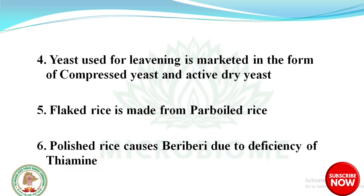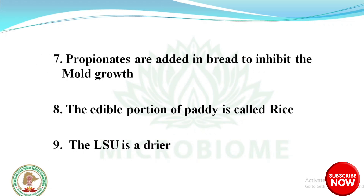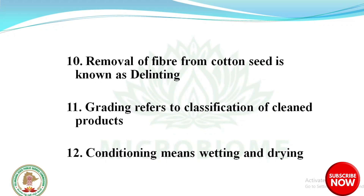Polished rice causes beriberi due to the deficiency of thiamine. Propionates are added to bread to inhibit mold growth. The edible portion of paddy is called rice. LSU is a dryer. Removal of fiber from cotton seed is known as delinting. Grading refers to classification of cleaned products.